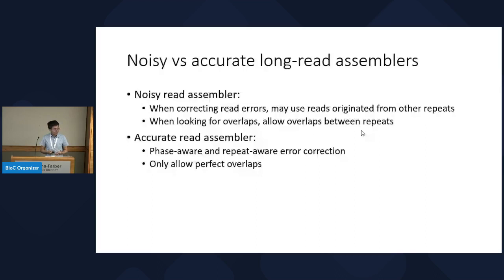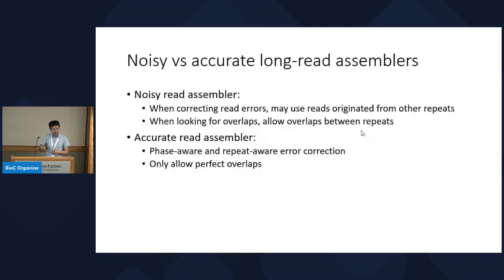The gold standard here is the telomere-to-telomere assembly published in Science — that's the finished CHM13 genome. It uses an algorithm derived from HiCanu, basically an improved version of HiCanu, with more data types: ultra-long reads and also short reads, plus a lot of manual curation. In this comparison graph, it's 100% algorithm — no curation, just put the HiFi data in and you get the result.